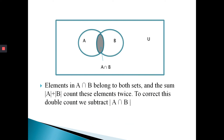In the second scenario, if A and B overlap as shown in the figure, then the elements in A intersect B belong to both sets. The sum of the cardinality of A plus the cardinality of B counts these elements twice. To correct this double counting, we subtract the cardinality of A intersect B.